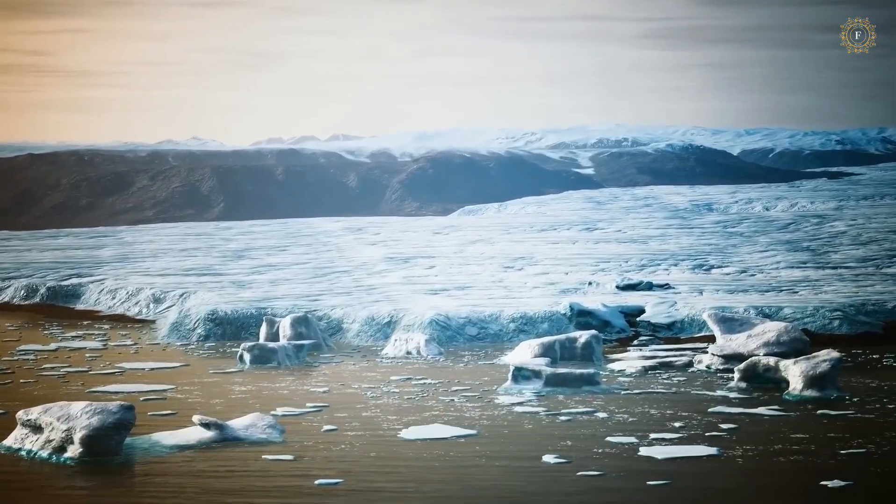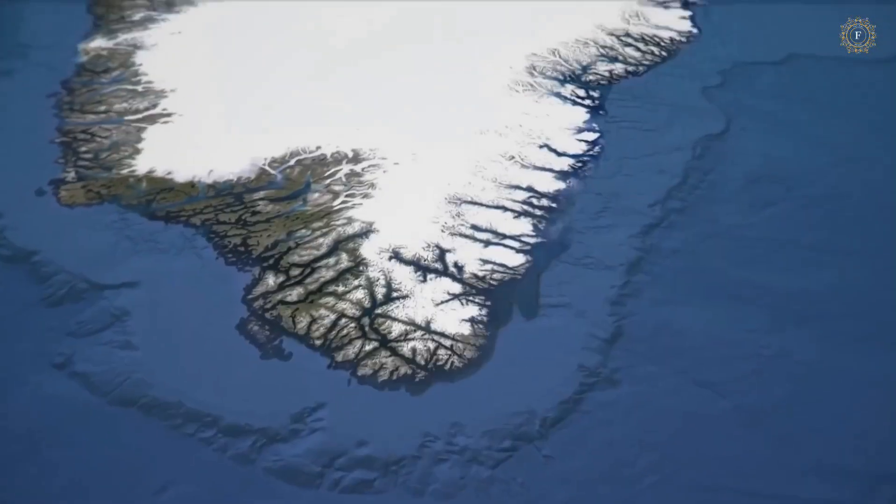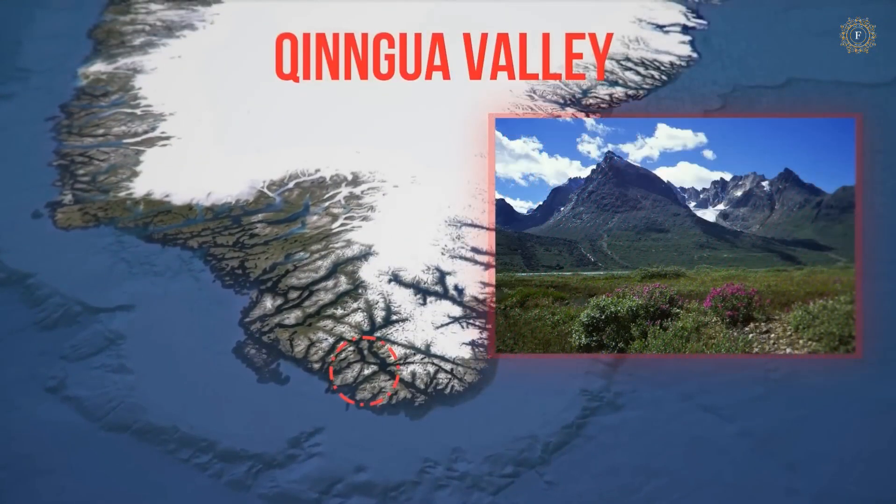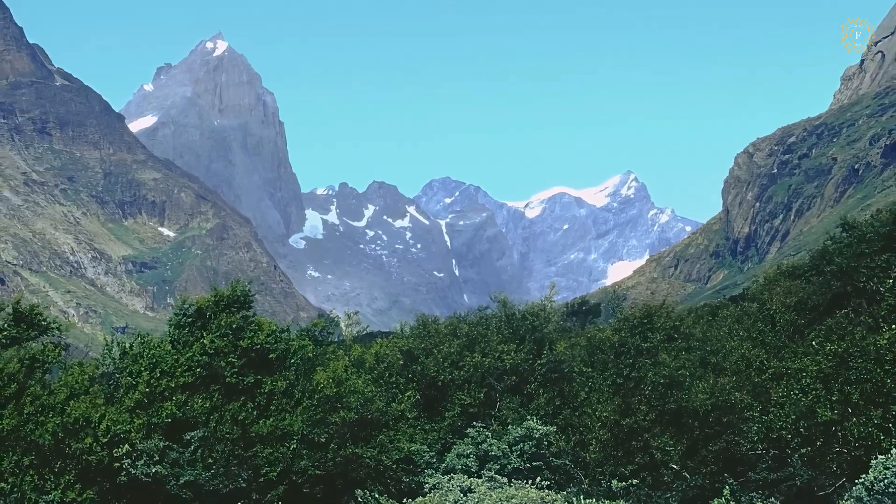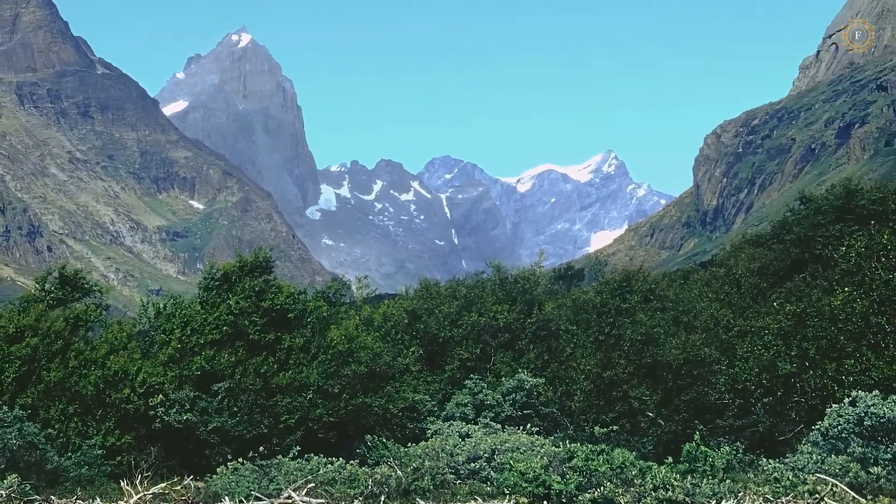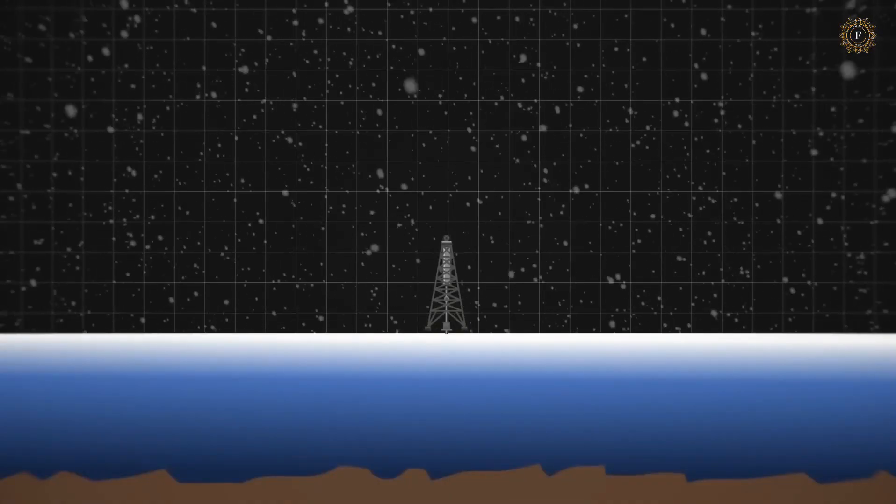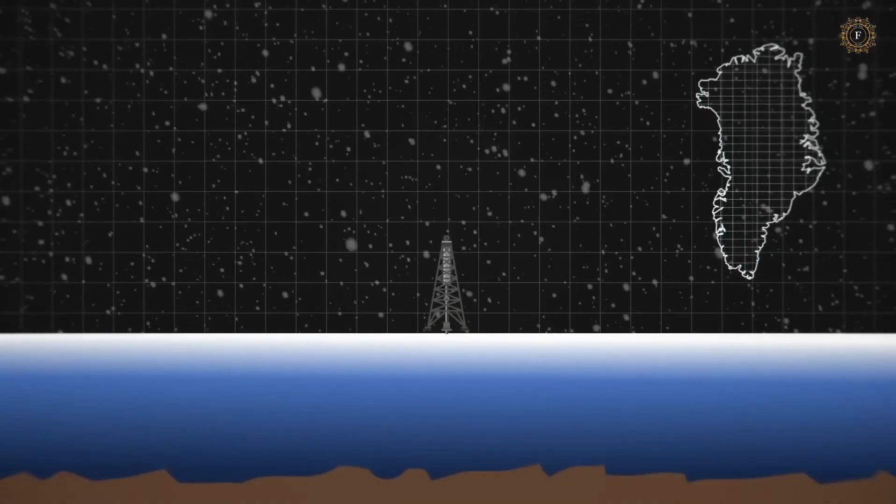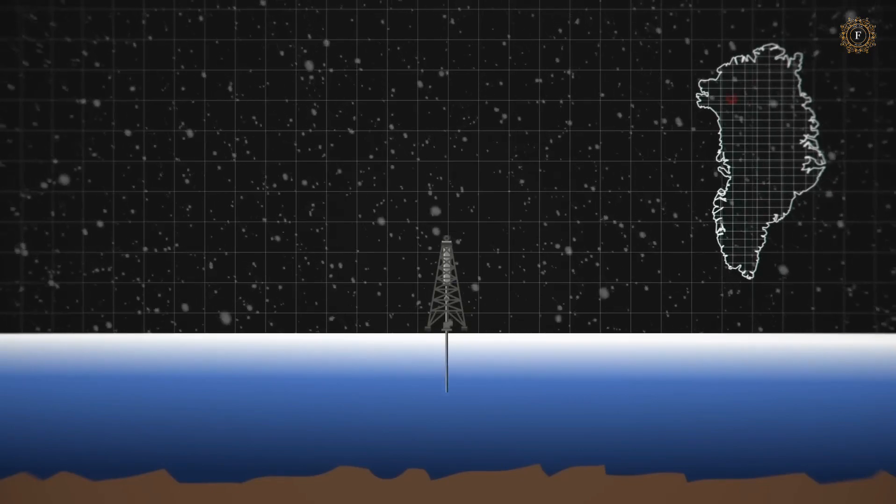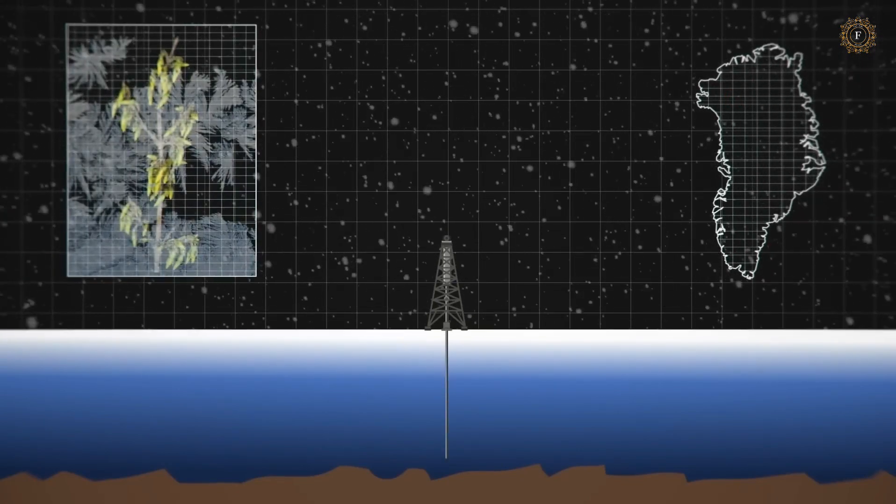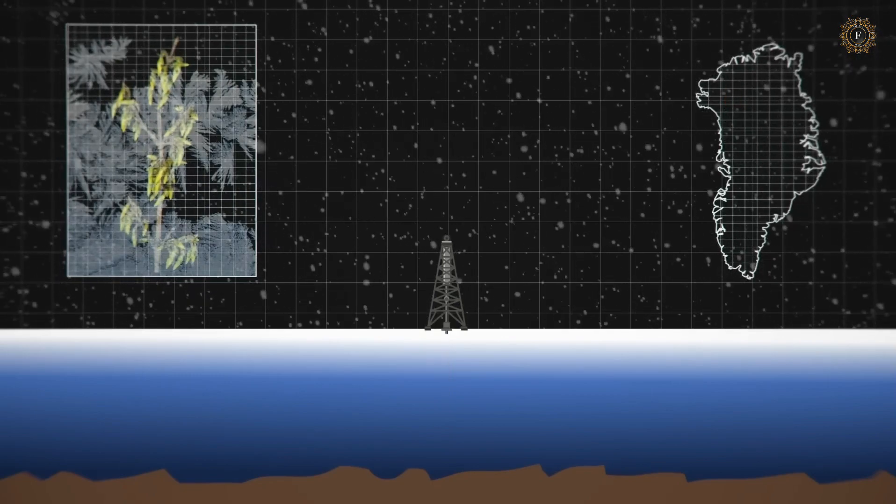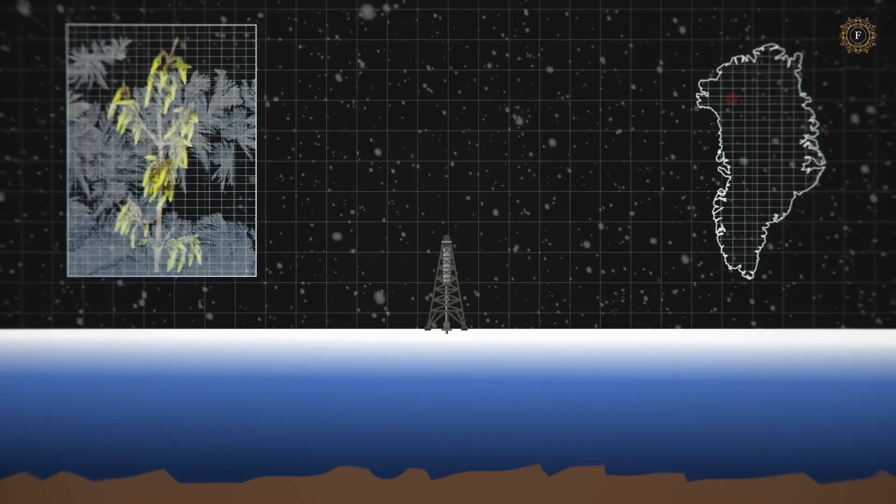But what makes this discovery even more significant is its potential impact on our future. As global temperatures continue to rise, the stability of the Greenland ice sheet is crucial for the entire planet. Its melting contributes to rising sea levels and could have disastrous consequences for coastal communities around the world. By better understanding the formation and history of the ice sheet, we can potentially predict and prepare for its future changes.